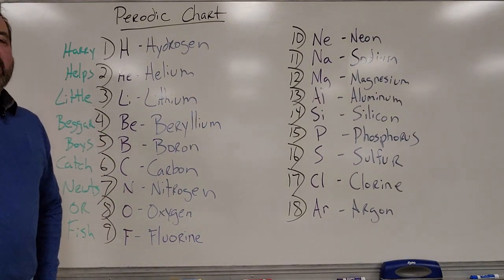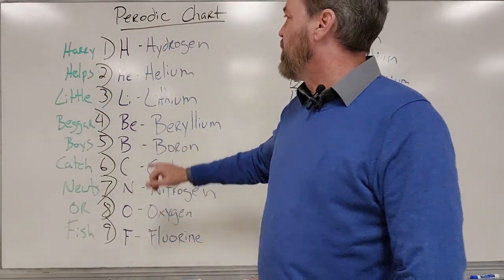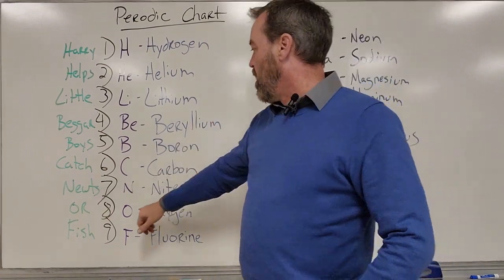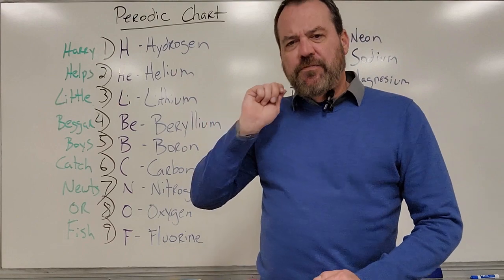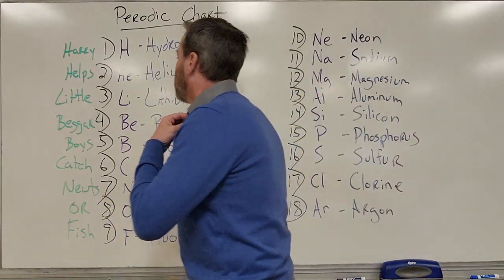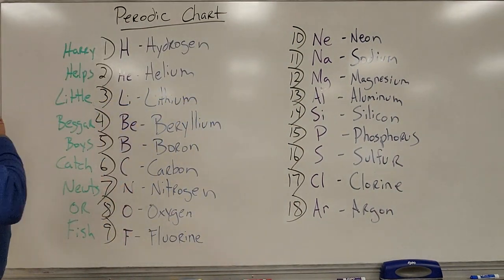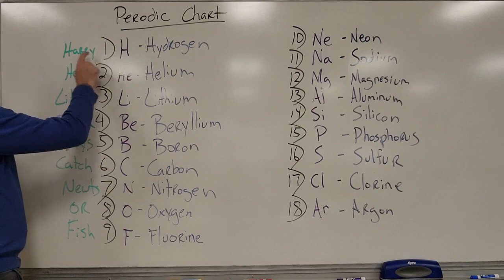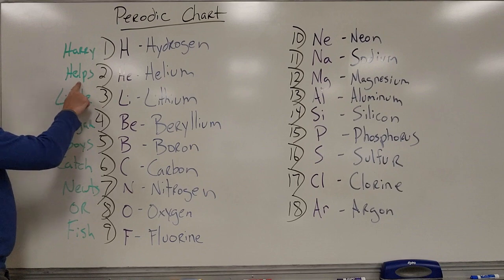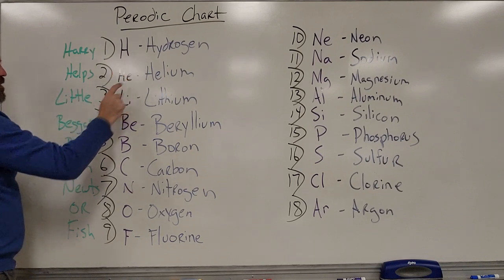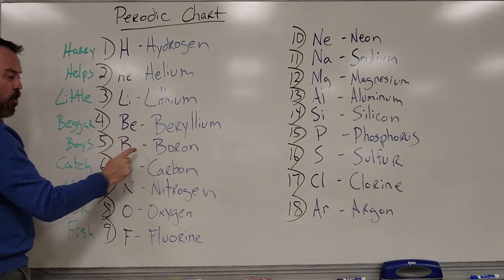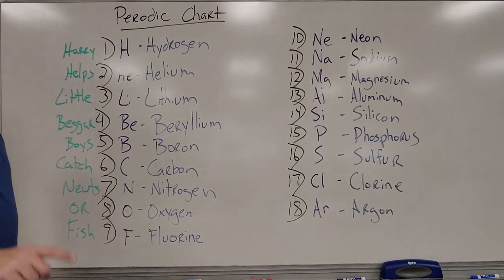I'm very strategic in how I put these words together because there are a couple of H's and a couple of B's. So: hairy — H for hydrogen; helps — HE for helium, so I don't confuse my H's; LI for lithium; BE for beryllium; BO for boron; and so on all the way down.